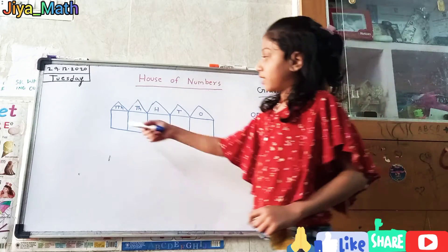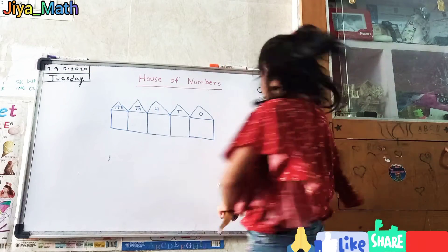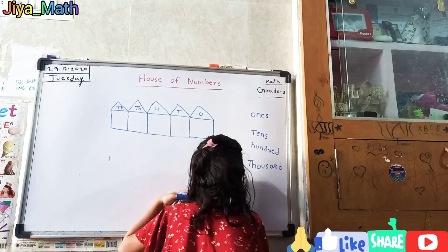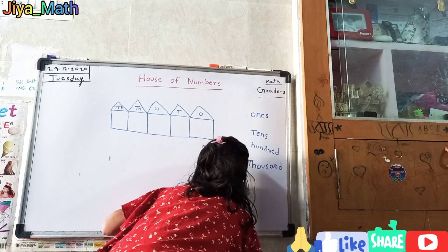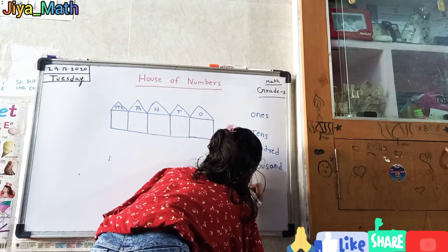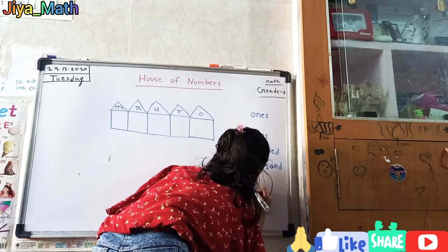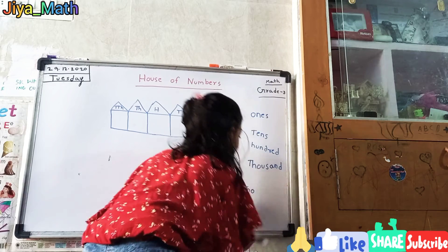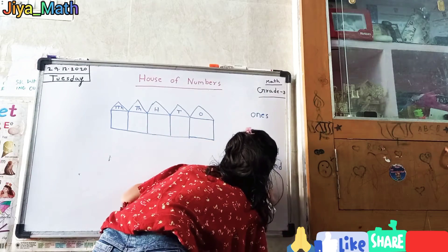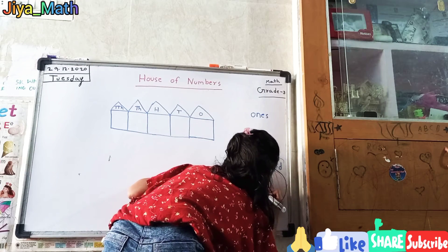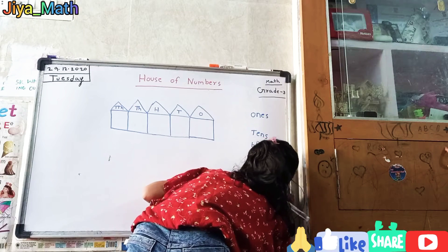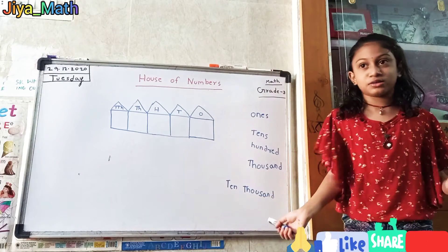And one more is 10,000. Ten thousands is T-E-N-T-H-O-U-S-A-N-D. 10,000.